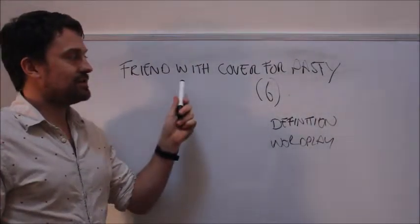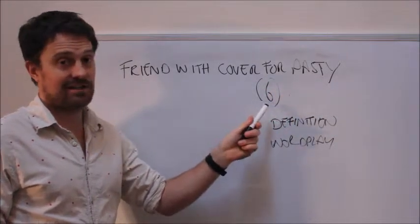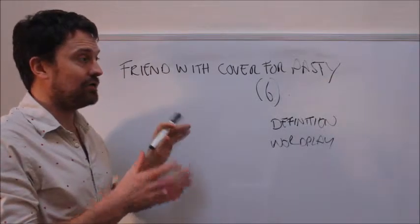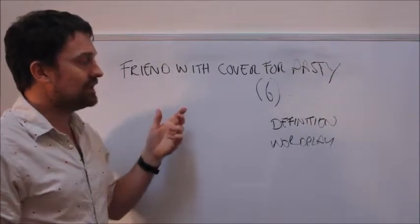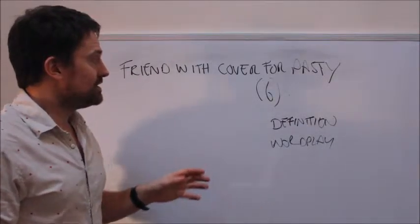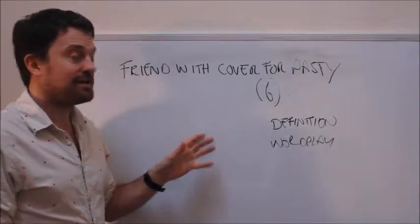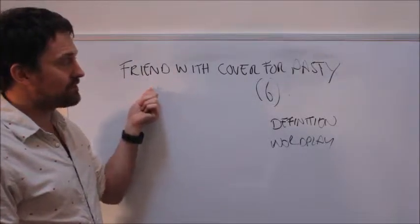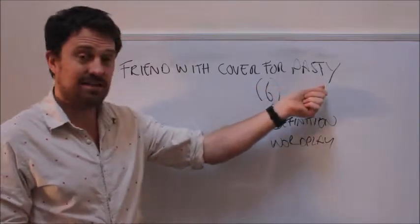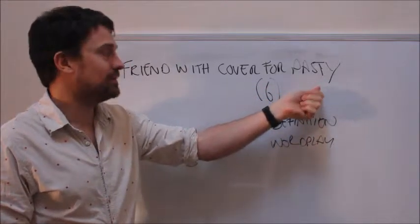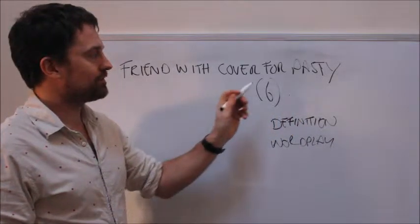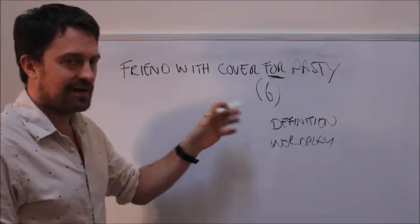Right, friend with cover for pasty, six letters long. Now this is a really basic crossword clue of the most fundamental type. So still start from the same position: you look for your definition, you look for your wordplay. Definition here, remember one end or the other. It's either friend, or cover for pasty is conceivable, pasty is conceivable, but you're looking once again for this word.